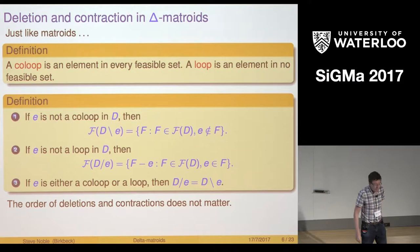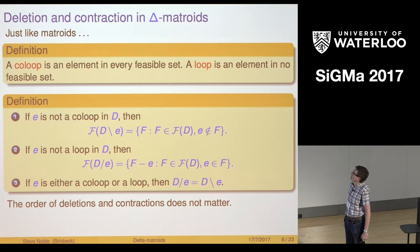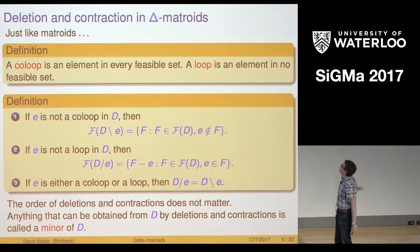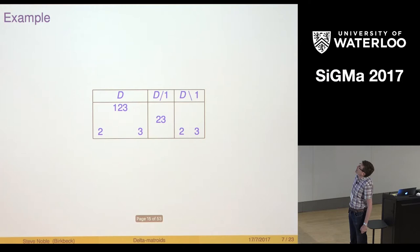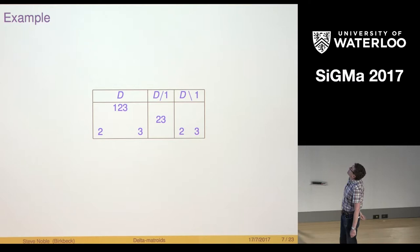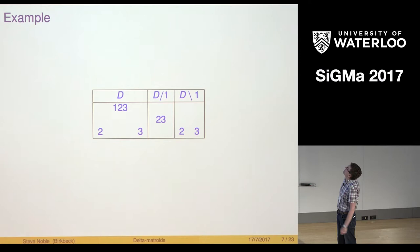Here's a quick example. If that's my Delta Matroid, those are the feasible sets. If I contract one, I've got one feasible set that contains one so I retain that but I remove one from it and I've got two feasible sets, so that gives me the contraction. I've got two feasible sets that don't contain one so I just keep them and that gives me the deletion.